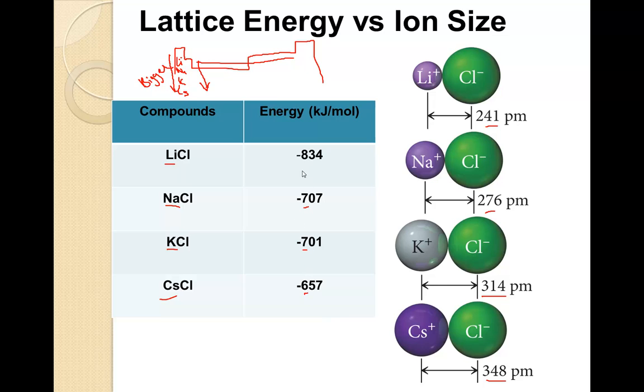It's still going to be negative because it's exothermic. However, it's going to be less energy being given off, the actual magnitude of it. And that is lattice energy and bond energies.